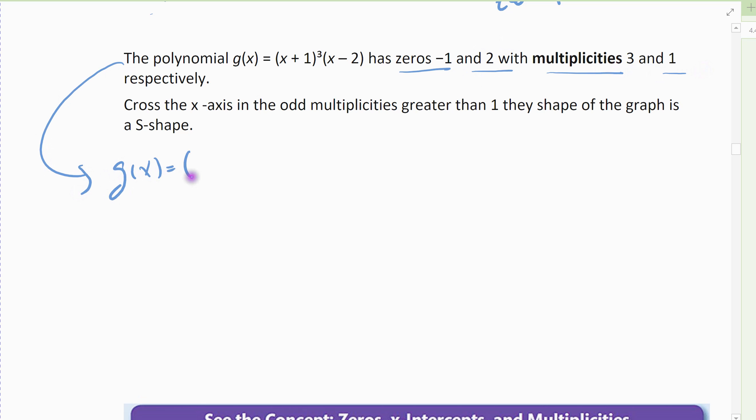If I rewrite this, it's really (x + 1) times (x + 1) times another (x + 1). There are three of those zeros and then just one of the (x - 2). Whenever it's an odd multiplicity, it crosses the x-axis.